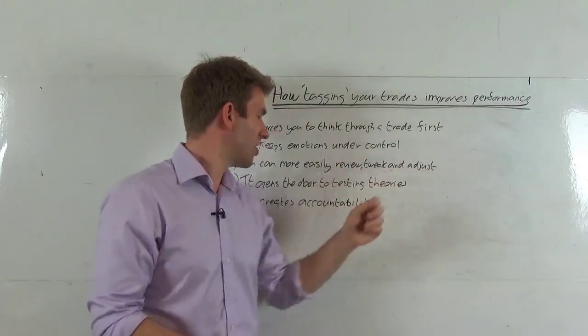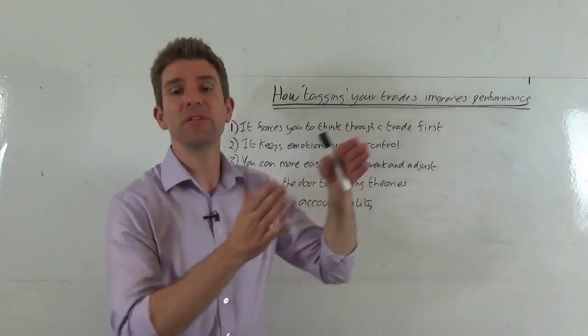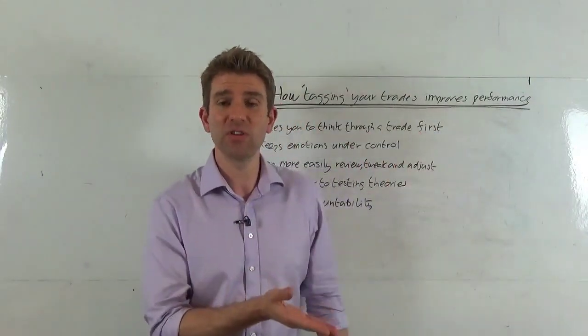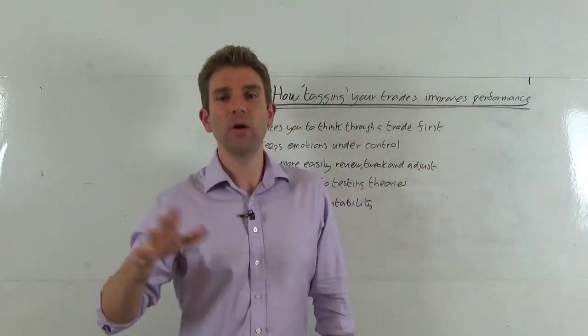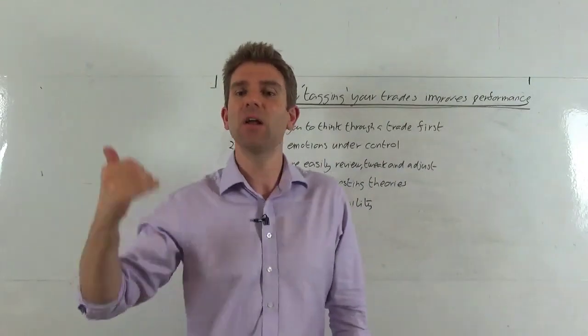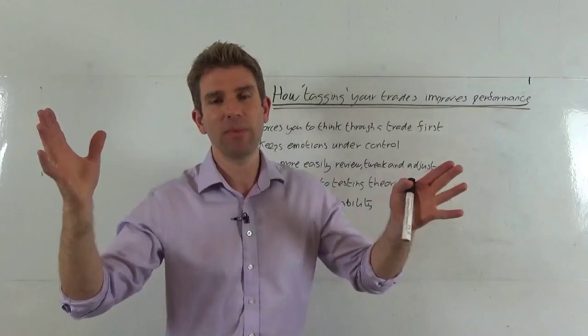Number four: it opens the door to testing theories. What you can do is you can say, hey, I've got these five strategies that I do, these three strategies that I do. I've got an idea for buying this, this, this, and this. Okay, create an outline strategy for it. Give it a tag at number seven, whatever it may be, seven T if you're testing it. Doesn't matter about the nomenclature, does it? It's just a case of tagging it.